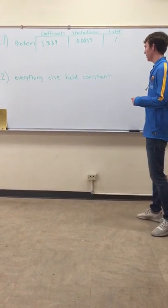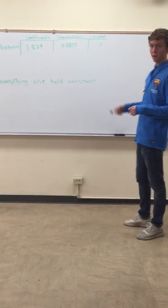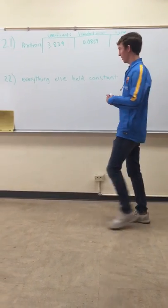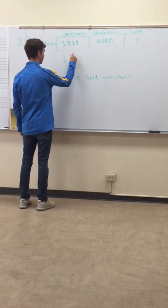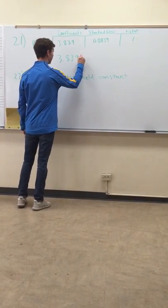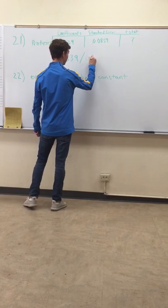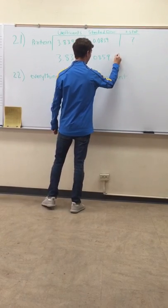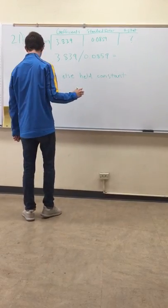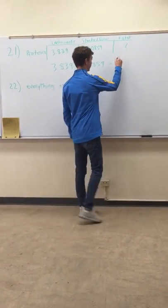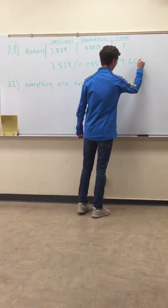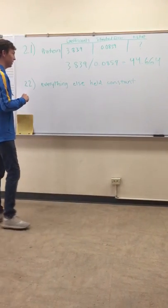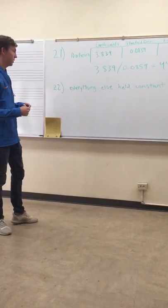Question 21 is asking for the t-stat and it gives you the coefficient and the standard error. The easiest way to find that is you divide them: 3.839 divided by 0.0859, which comes out to 44.664. That's pretty simple, it's just an easy way to find the t-stat using the coefficient and the standard error.